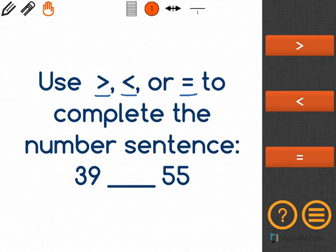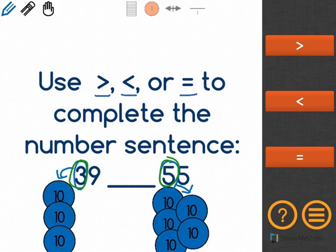So I'm going to look at the tens place value. I can see that 39 has 3 tens and 55 has 5 tens.